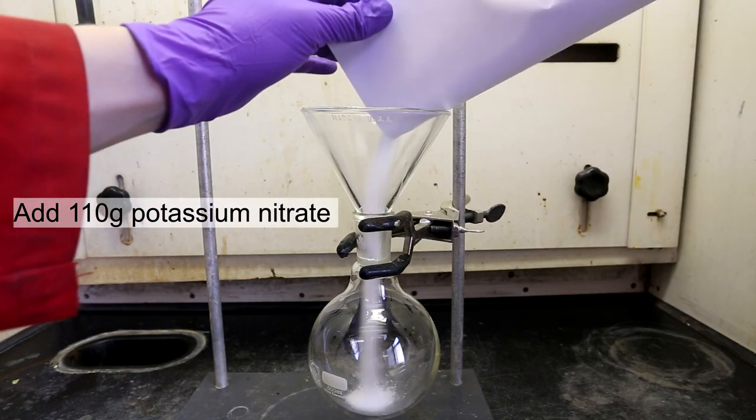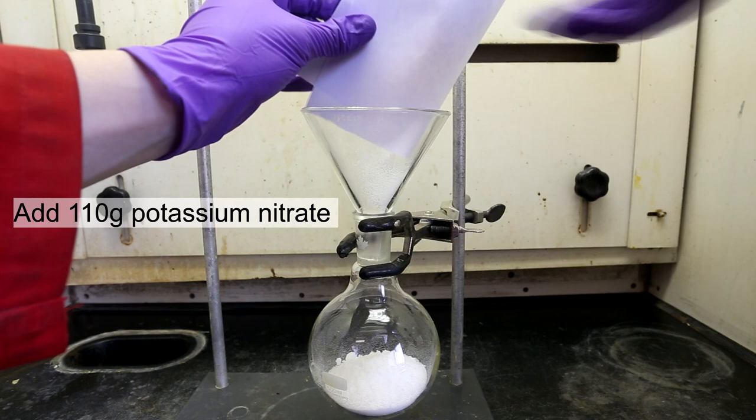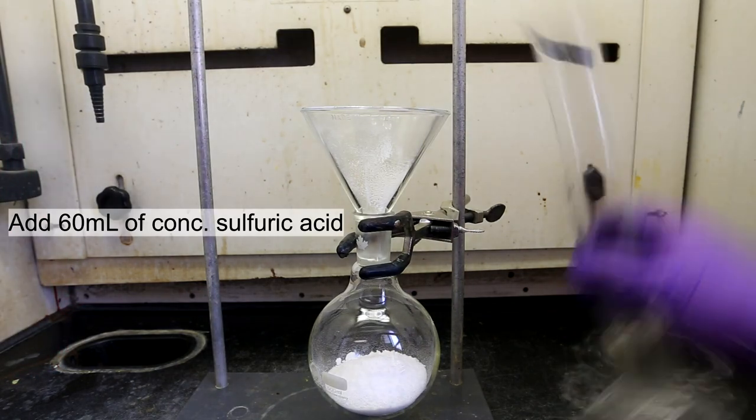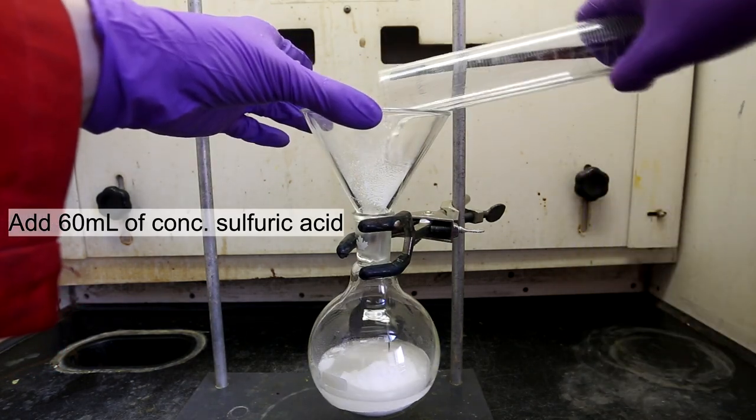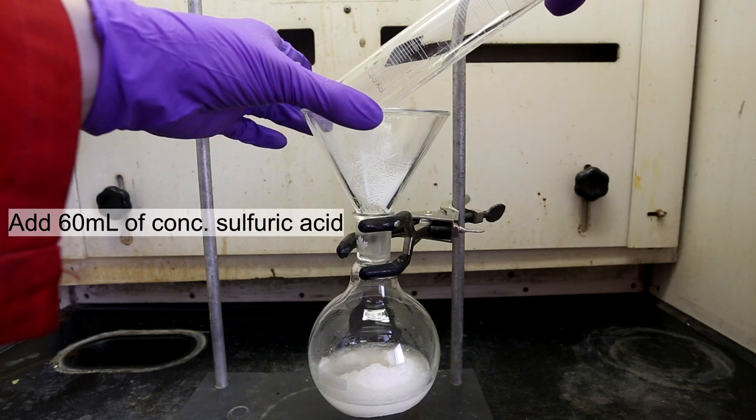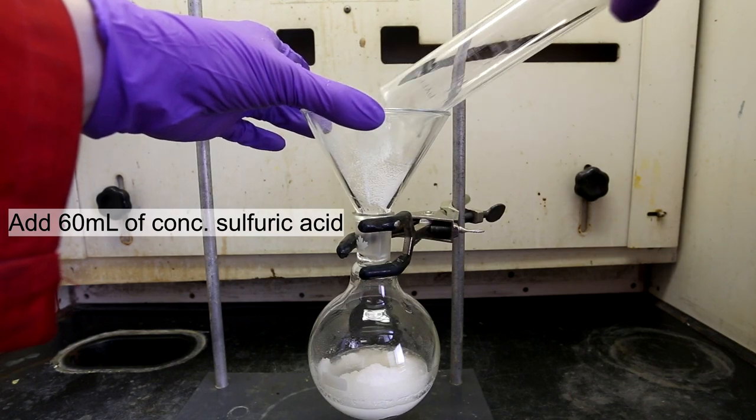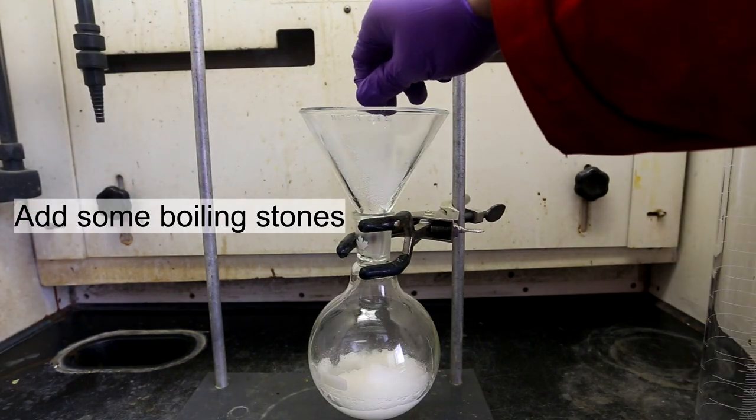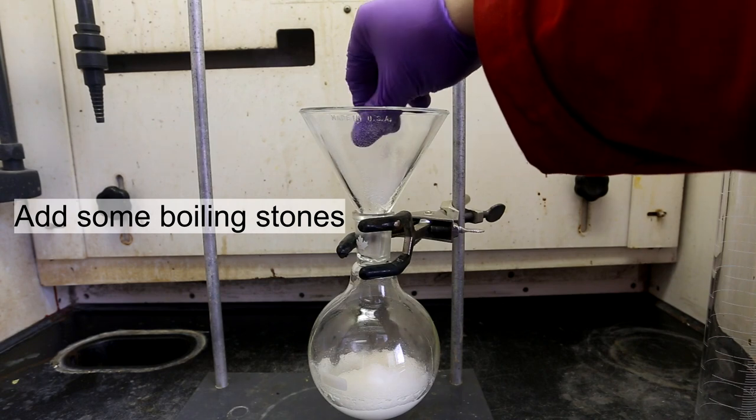First, add about 110 grams of potassium nitrate to a round bottom flask. Next, add 60 milliliters of concentrated sulfuric acid to the potassium nitrate in the round bottom. And finally, add some boiling stones to prevent bumping.